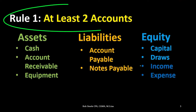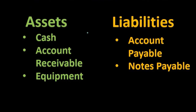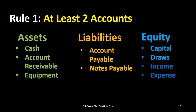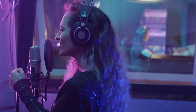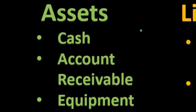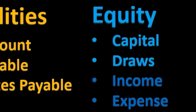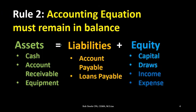The first rule is that at least two accounts are affected, meaning we cannot have just one account affected because the accounting equation would then be out of balance. We need at least two — there may be more than two, but there will never be less than two. Whenever recording any transaction, whether with the accounting equation or with debits and credits, there will never be only one account. The majority of the time there will be two accounts, and it is possible to have more than two as long as we remain in balance.